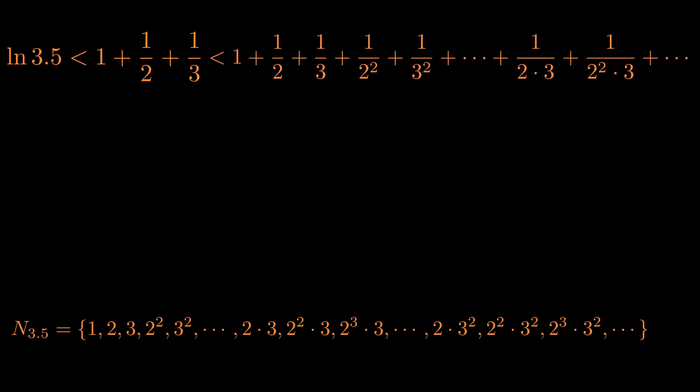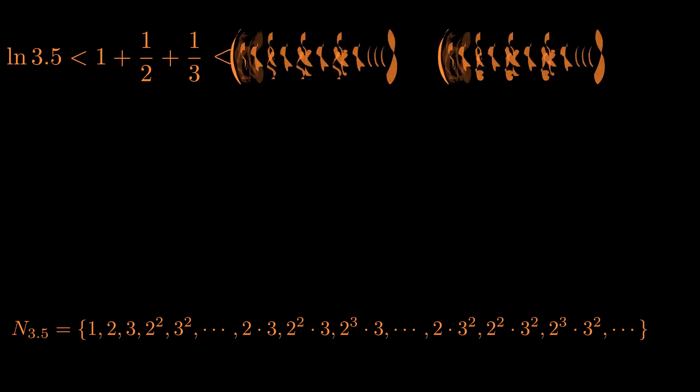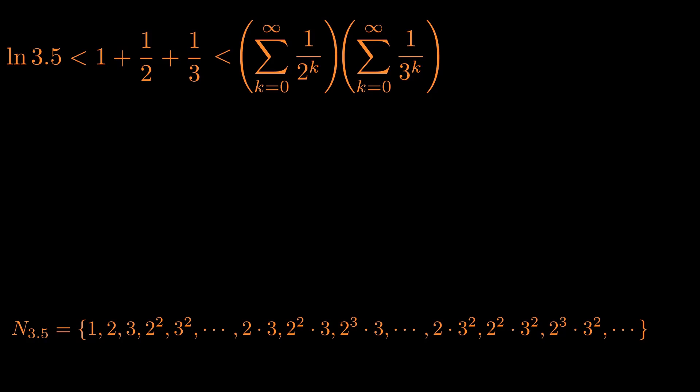We then see that the sum we wrote before will be less than the sum of the reciprocal of each element of N subscript 3.5. We can rewrite that sum as the product of (1 plus 1 over 2 plus 1 over 2 squared up to infinity) and (1 plus 1 over 3 plus 1 over 3 squared up to infinity), which are both infinite geometric series. We can see that we can write this as a product of a sum.